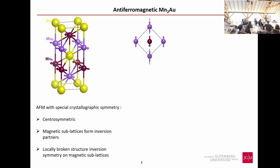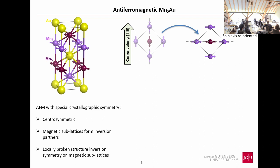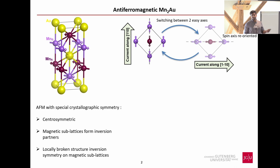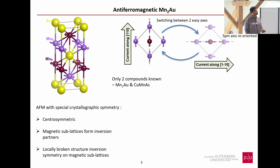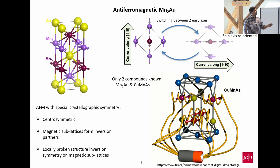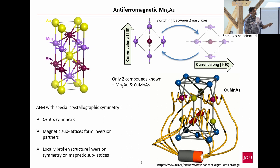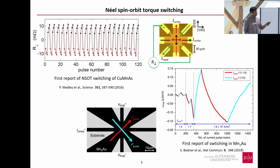What does the Néel spin-orbit torque do? When you drive a current along the easy axis — say the [110] direction — the current exerts staggered spin-orbit fields on the two magnetic sublattices. This causes a rotation of the magnetic moments and an effective reorientation of the Néel order or spin axis. By passing another current pulse along the new spin axis, you can rotate it back to the original configuration. The current exerts opposite fields on the opposite sublattices, analogous to oppositely wound Oersted coils.